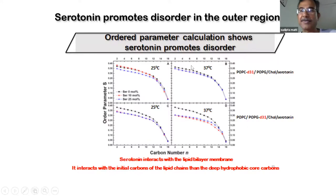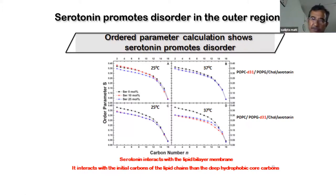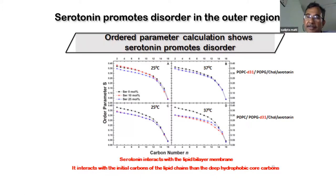This happens at 25°C and 37°C. We are very happy: we measured that disorder increases with serotonin in both the AFM force and the NMR, which is a very strong quantitative measure — both tell the same story.